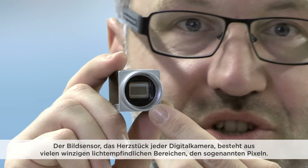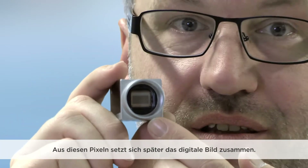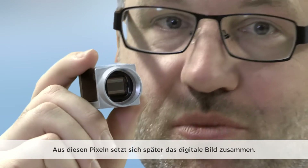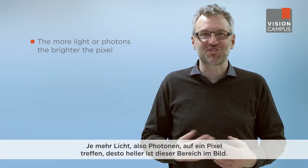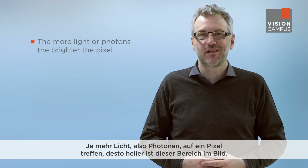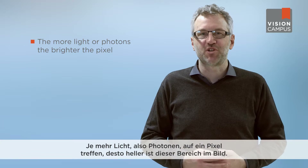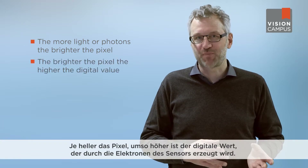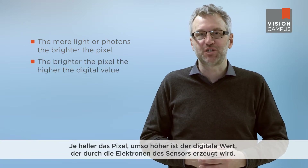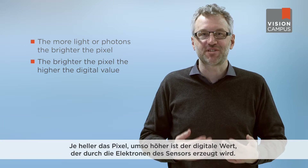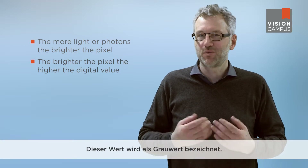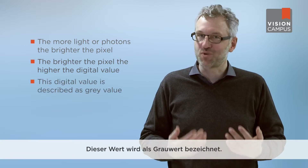The image sensor, the heart of any digital camera, is composed of many tiny light-sensitive areas known as pixels. These pixels are later collated to form the digital image. The more photons that strike a pixel, the brighter that portion of the image becomes. The brighter the spot, the higher the digital value produced by the electronics within the sensor — we describe this value as the gray value.